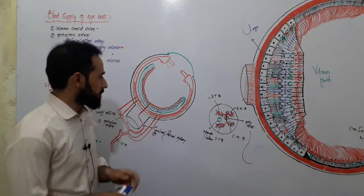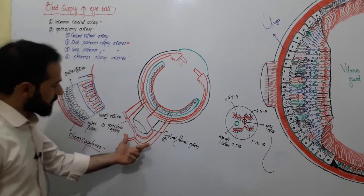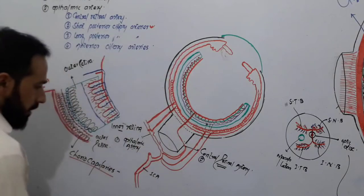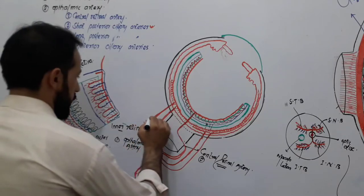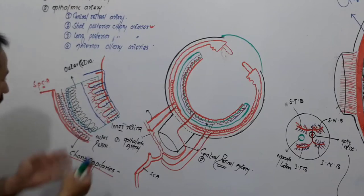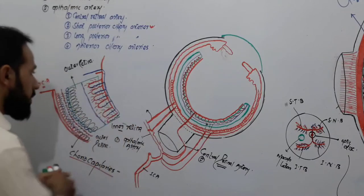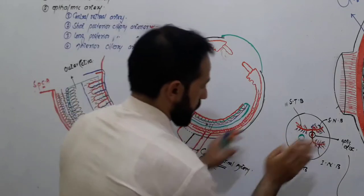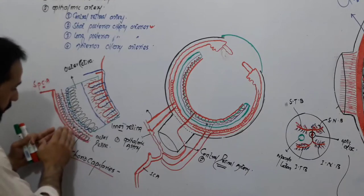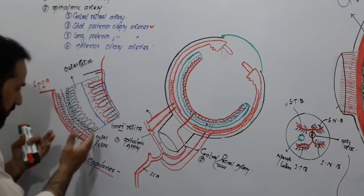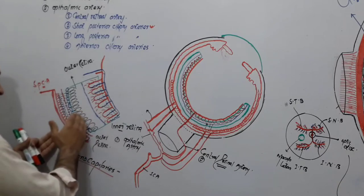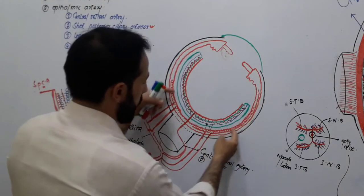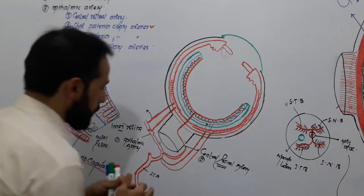Hello dear friends, welcome back. In the previous lecture we talked about the blood supply of the retina — the branches of the central retinal artery and the branches of the short posterior ciliary arteries. We know that the retina receives its blood supply from two different regions: from the inner side via the central retinal artery, and from the outer side via the choriocapillaries made by the short posterior ciliary arteries.